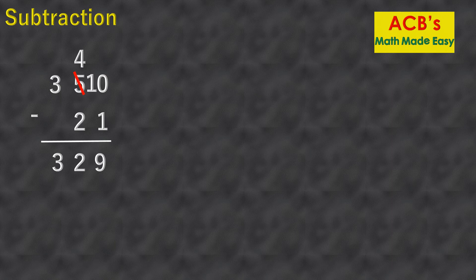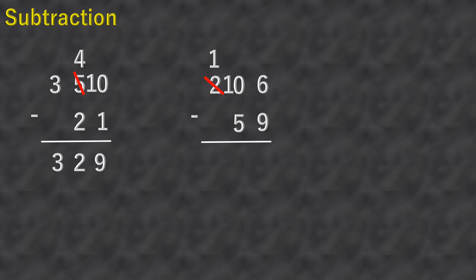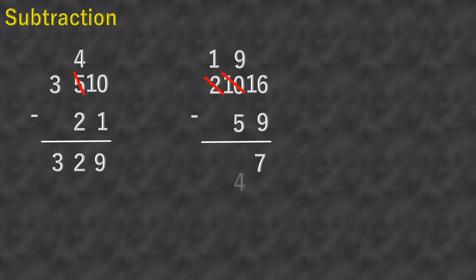Two hundred six minus fifty-nine. Six minus nine is not possible. It's also not possible to borrow from zero because zero cannot give one. So we borrow from the two — two becomes one and zero becomes ten. Now six can borrow from ten: ten becomes nine and six becomes sixteen. Sixteen minus nine equals seven, nine minus five equals four, then bring down one. So two hundred six minus fifty-nine equals one hundred forty-seven.